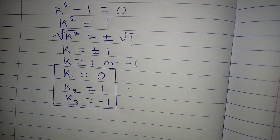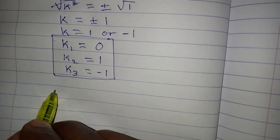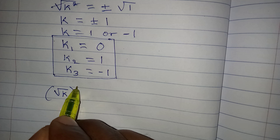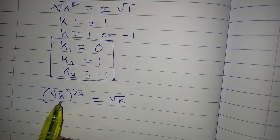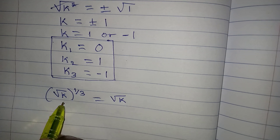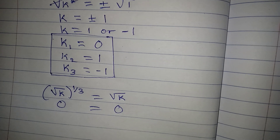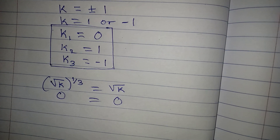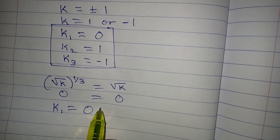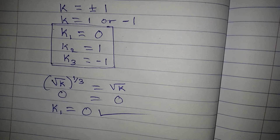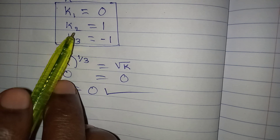Going back to the original equation — the square root of k to the power of 1/3 equals the square root of k — if we put in zero, the left side is zero and the right side is also zero, since the square root of zero is zero and the cube root of zero is also zero. Therefore k₁ equals zero satisfies the equation.